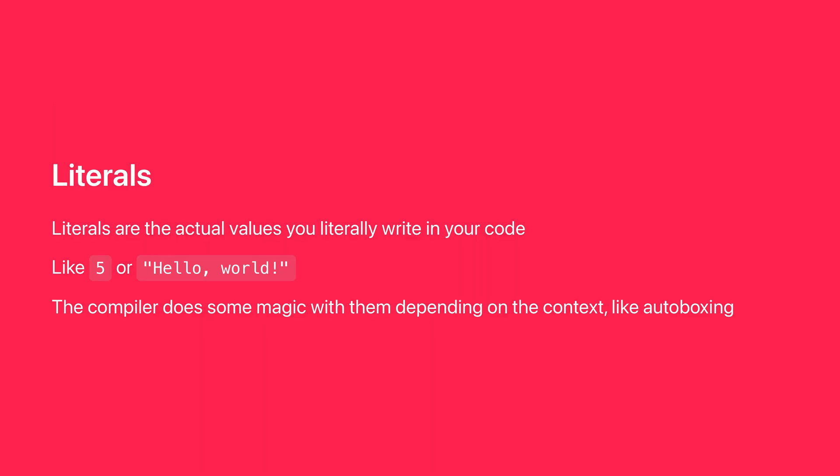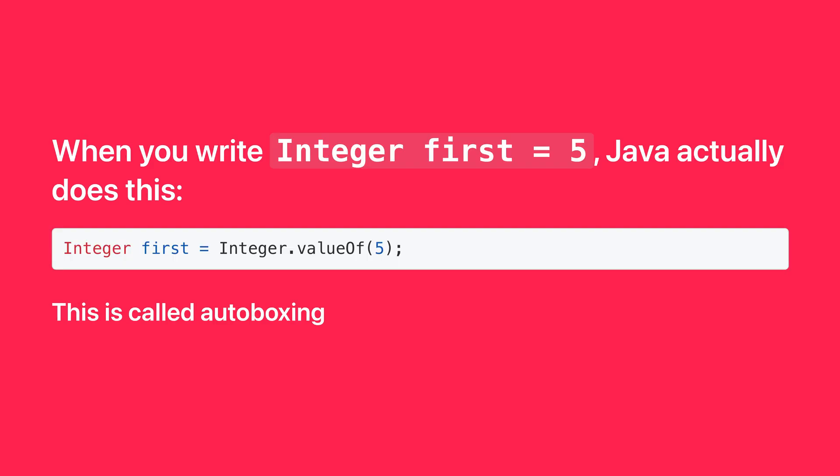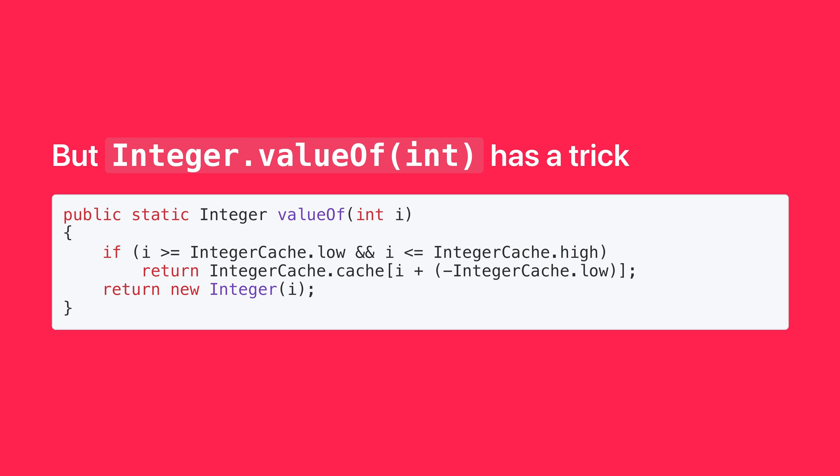Literals are the actual values you literally write in your code, like 5 or "hello world". The compiler does some magic with them depending on the context, like autoboxing. When you write the literal 5 and assign it to a big-I Integer, Java automatically converts it into an Integer object for you — this is called autoboxing. But Integer.valueOf has a little trick: Java checks if the number is between -128 and 127, and if it is, it returns a cached Integer object. If not, it creates a new one. This is to save memory and improve performance for frequently used numbers, and it's why double equals has inconsistent behavior with Integers depending on the value.